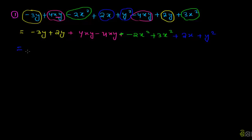So, minus 32. This means minus 3y. 4xy minus 4xy. If you find y on the xy, minus 4.